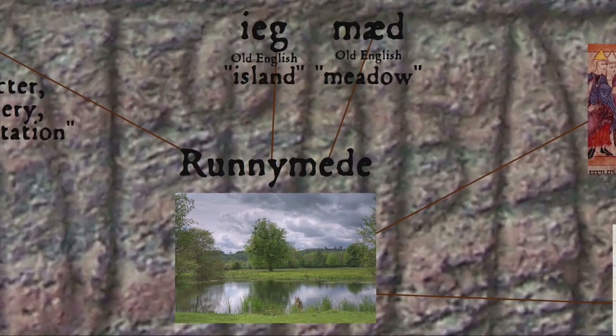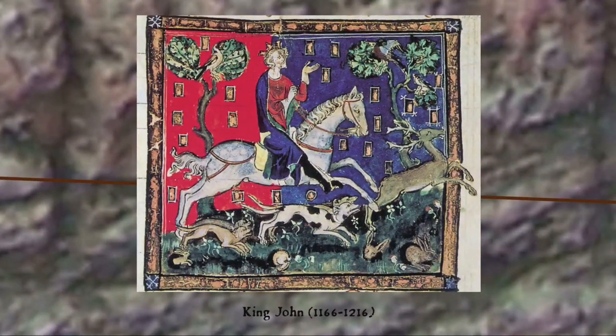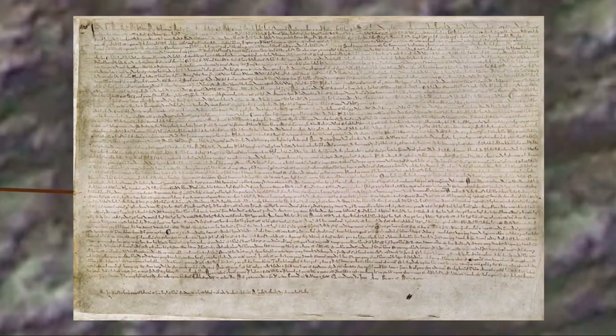So Runnymede literally means 'Rune Island Meadow', and it's therefore appropriate that in the year 1215 the feudal barons of England — who were, I suppose, raucous and ready to riot — buttonholed King John and forced him to accept the Magna Carta, which limited the powers of the tyrannical king. Not that he kept to his agreement; he rescinded it shortly afterwards. Nevertheless, Magna Carta marks an important milestone in constitutional history.